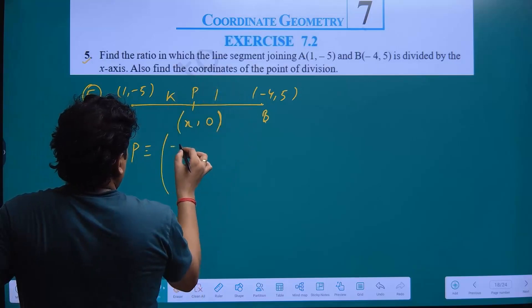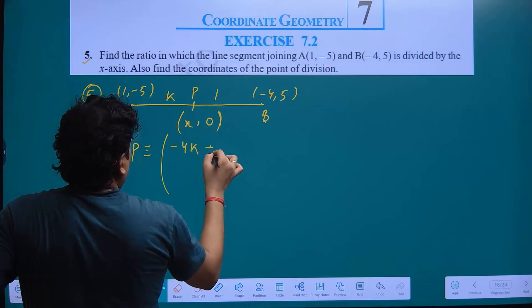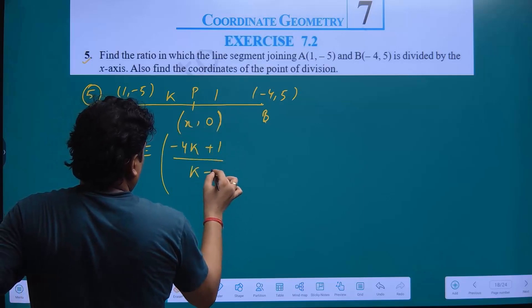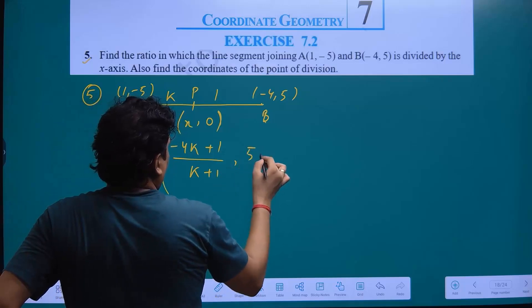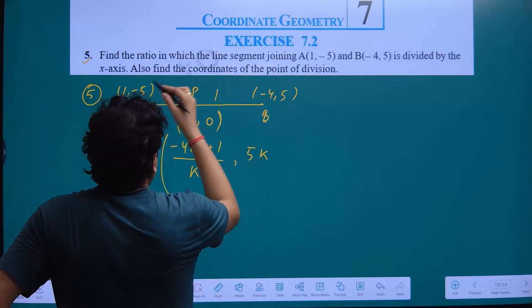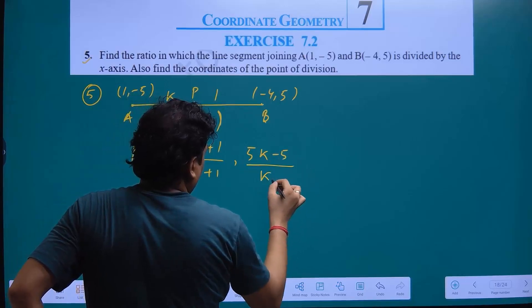K into 4 minus 4 plus 1 upon K plus 1. And 5K minus 5 upon K plus 1.